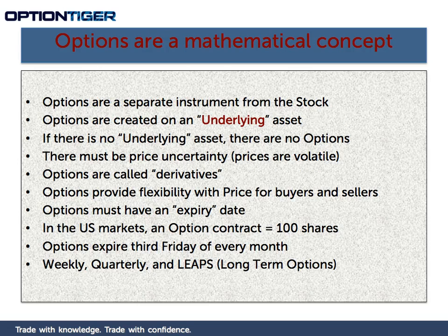The fact that mathematicians came up with the model should tell you that options are a purely mathematical concept. These options are based on a certain underlying asset — which could be a stock, a currency, a commodity, real estate, or anything. So there are two different instruments: the option itself, and the stock or underlying asset. They also represent two different markets — the options market is very separate and different from the stock market. If there was no underlying asset, there cannot be any options.